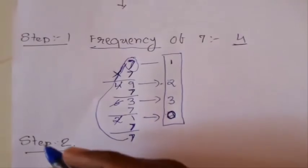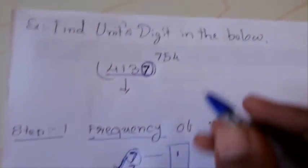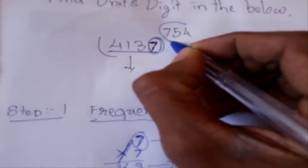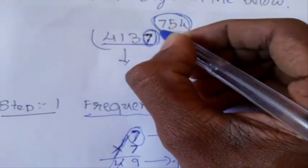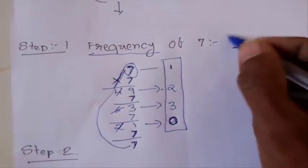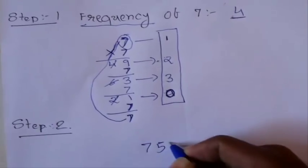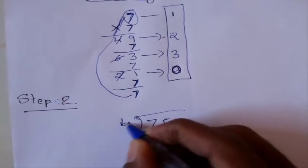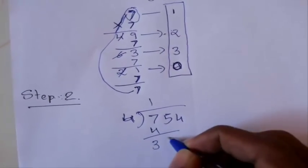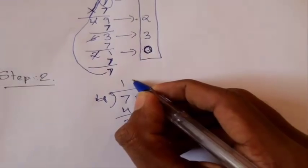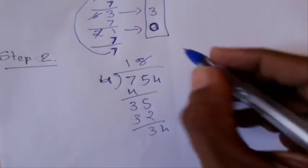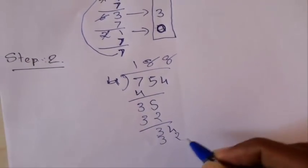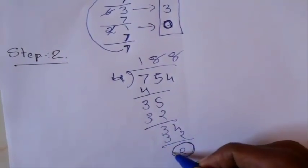In the second step, we need to divide the exponent, which is 754, by this frequency. So in the second step: 754 divided by 4. 4 × 188 = 752, so 754 divided by 4 gives us a remainder of 2.